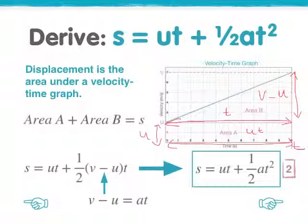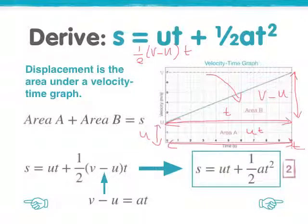If we then work out the area of the triangle, we end up with half, because it's a triangle, v minus u, t. Add those two together, we have a total displacement of half v minus u t plus ut.